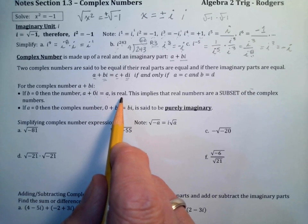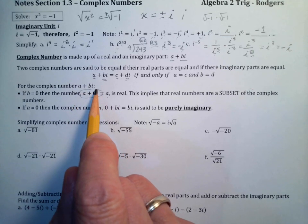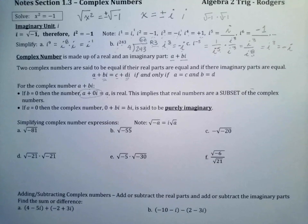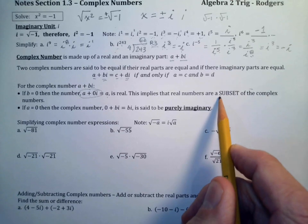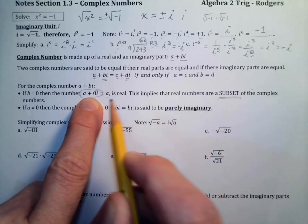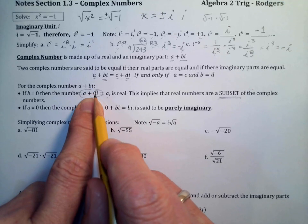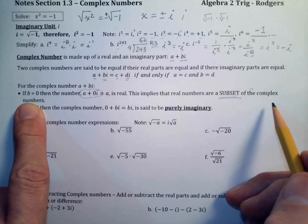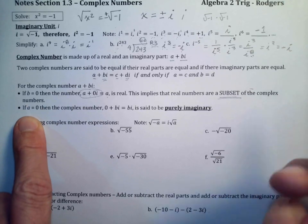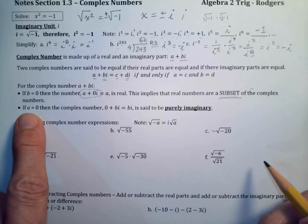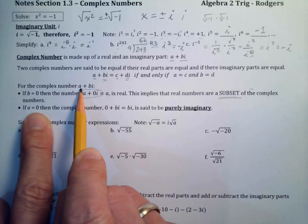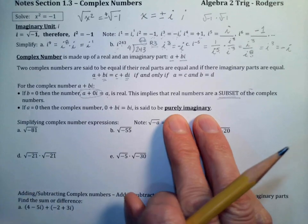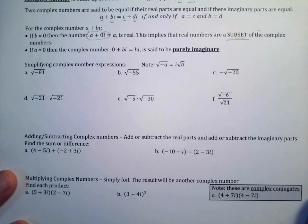For a complex number a + bi, if b = 0, we just have a, which is purely real. So every real number you've ever worked with is actually a complex number — the real numbers are a subset of the complex numbers, just with b = 0. If a = 0 and we just have bi, we call that purely imaginary.